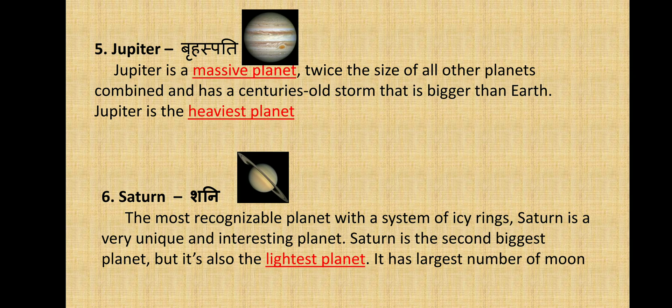Next we have Jupiter, also known as Brihaspati. Jupiter is a massive planet — twice the size of all other planets combined — and has a centuries-old storm that is bigger than Earth. Jupiter is the heaviest and the largest planet in our solar system.